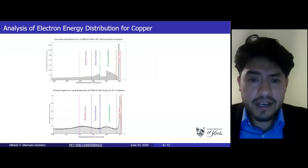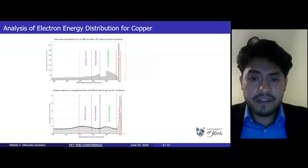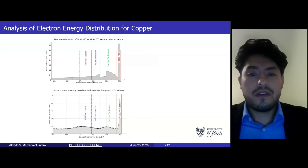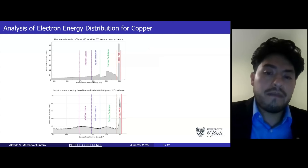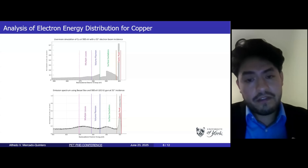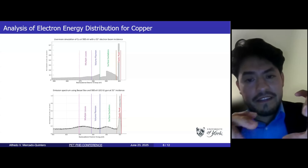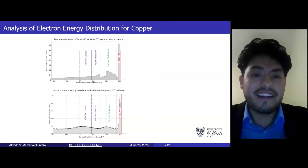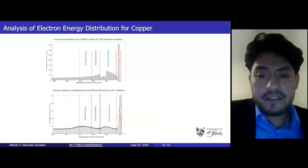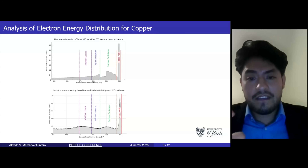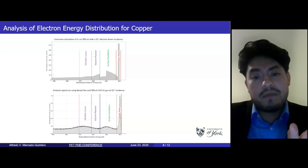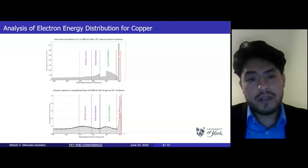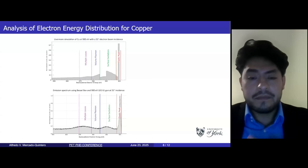This slide shows a comparison of the electron energy distribution — specifically the distribution of backscattered electron energies from the copper surface. The relative intensities confirm the characteristic features previously described, validating the excitation regions and giving an explanation of loss mechanisms, showing good agreement between the experimental work and the simulation work.